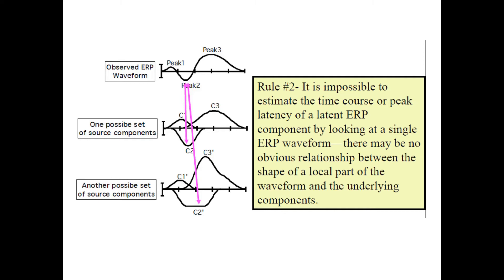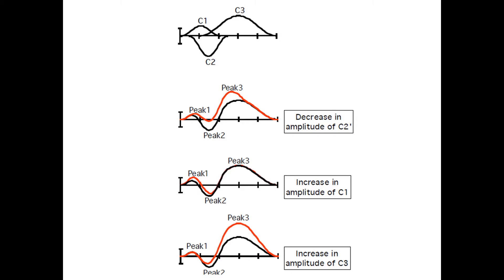And apparently the only, the easiest and the most pragmatic way to get an idea what happens with the component is to subtract one condition from the other. This is another illustration of how the amplitudes of the peak can be modified in a weird way with the variation of the amplitude of the component. The decrease in amplitude C2 makes us believe that peak 3 and maybe component C3 is increased. But this is not true.